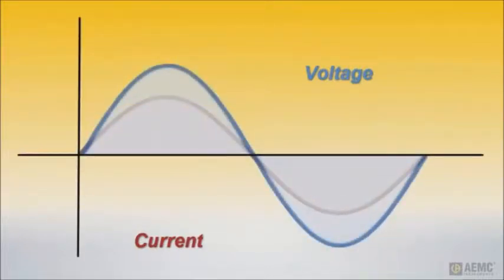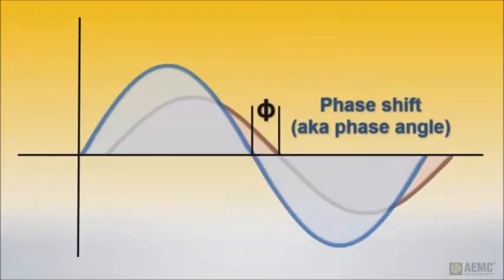However, several factors can cause current to peak before or after voltage. This time difference is referred to as phase shift or phase angle. This is usually expressed in degrees and is represented by the mathematical symbol phi.